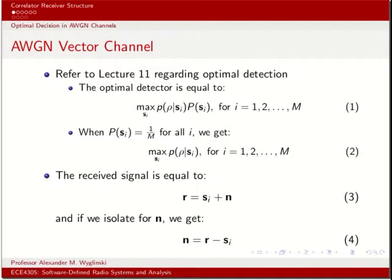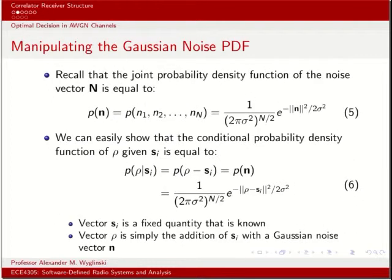We go back to our received signal representation shown in equation 3: the received vector equals the transmitted vector plus the noise vector. Each element of the transmitted signal vector is influenced by a corresponding noise vector element to produce the received vector. Let's rearrange to isolate the noise vector. Recall the statistical properties of the noise vector n: it is Gaussian with zero mean if the noise waveform is zero mean, and its elements are uncorrelated in the case of AWGN.